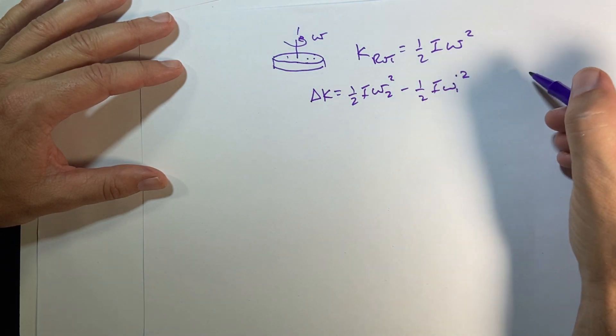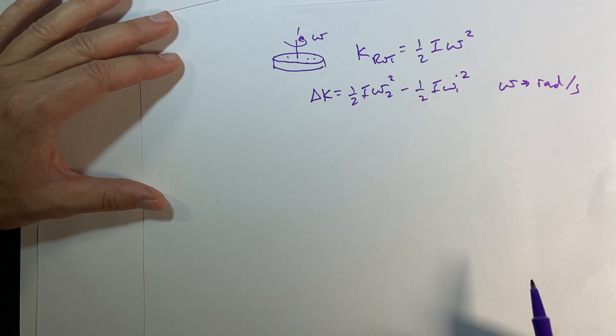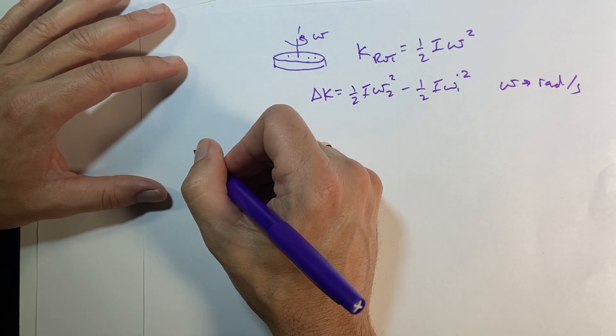Now in order to get this in joules, then omega has to be in radians per second. So let's go ahead and convert, because why not?